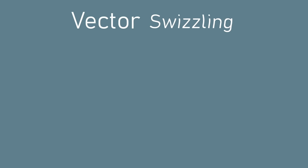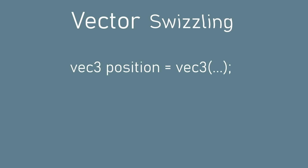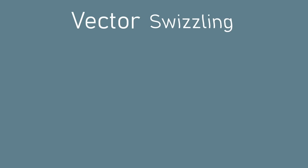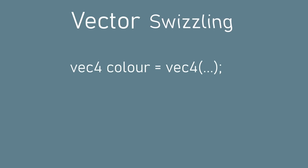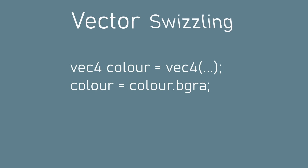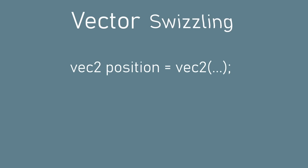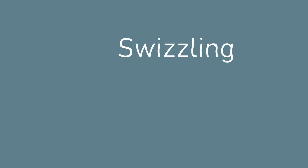For example if you had a 3D position stored in a vec3 but you needed a vec2 of just the x and y coordinates you could get that by saying position.xy. When swizzling, the components don't have to be in the regular order either. If you had a vec4 representing a color and you wanted to swap the red and blue channels you could do that by saying color.bgra which returns a new vec4 with red and blue switched. You can also use swizzling to create larger vectors than the one you started with. Once you get your head around it, swizzling is incredibly useful.